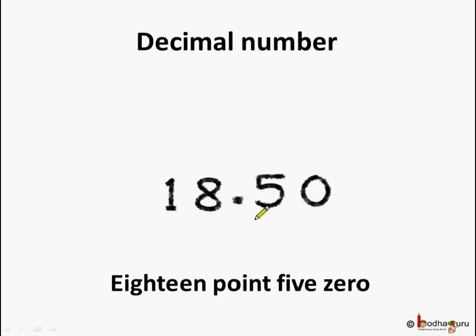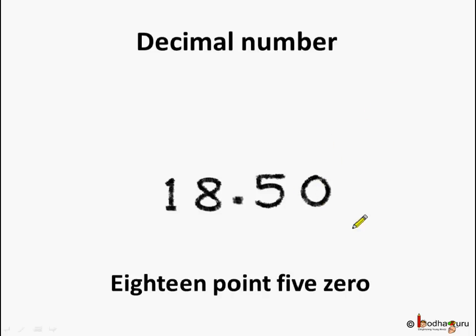18.50 is a decimal number as it has a decimal point. Here, 18 is the whole number part followed by a decimal point, and after the decimal point is the fractional part, that is 50, and we call it a decimal fraction.